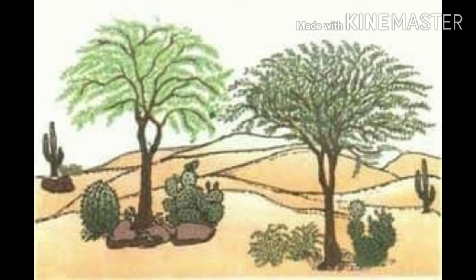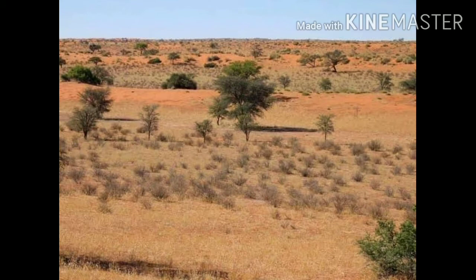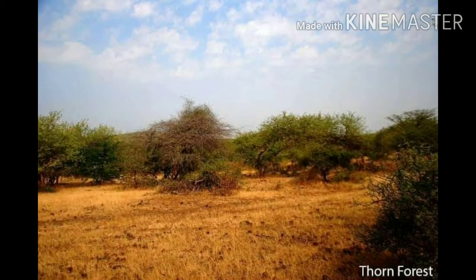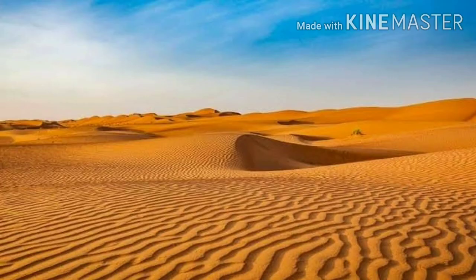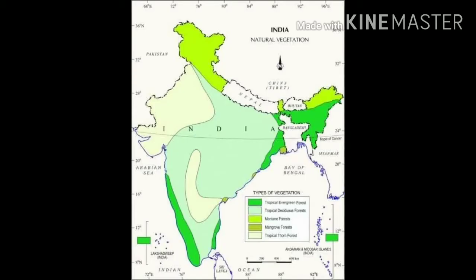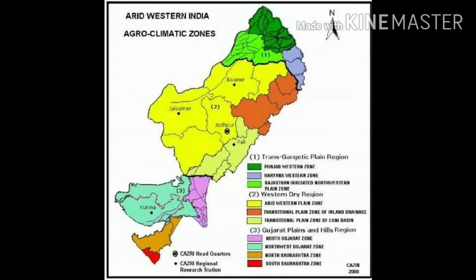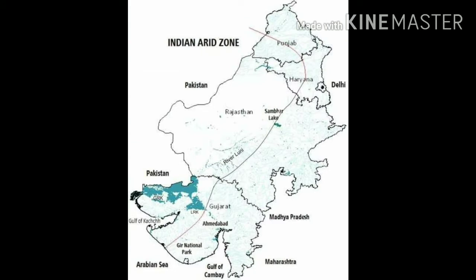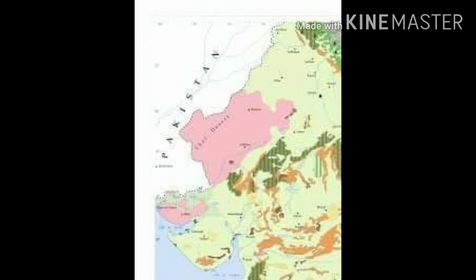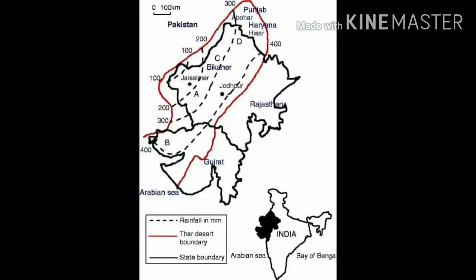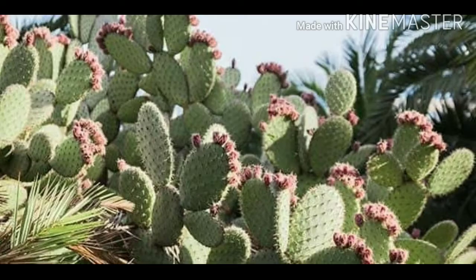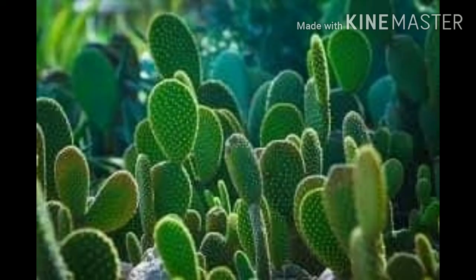Thorny trees and bushes comprise the thorn forest and scrub of India. These forests are found mainly in the northwestern part of India, including semi-arid areas of Gujarat, semi-arid and arid areas of Rajasthan, semi-arid areas of Madhya Pradesh, Uttar Pradesh and Haryana. The main plant species of these forests are Cacti or Cactus,